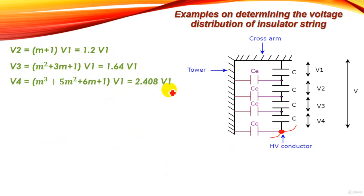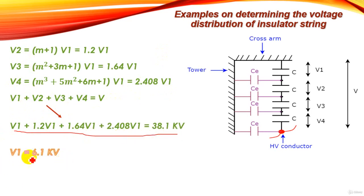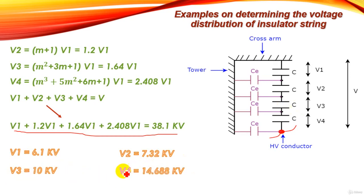Using the fourth equation V1 + V2 + V3 + V4 equals V, and substituting the expressions for V2, V3, and V4, we solve to obtain: V1 equals 6.1 kV, V2 equals 7.32 kV, V3 equals 10 kV, and V4 equals 14.68 kV across the lower unit.